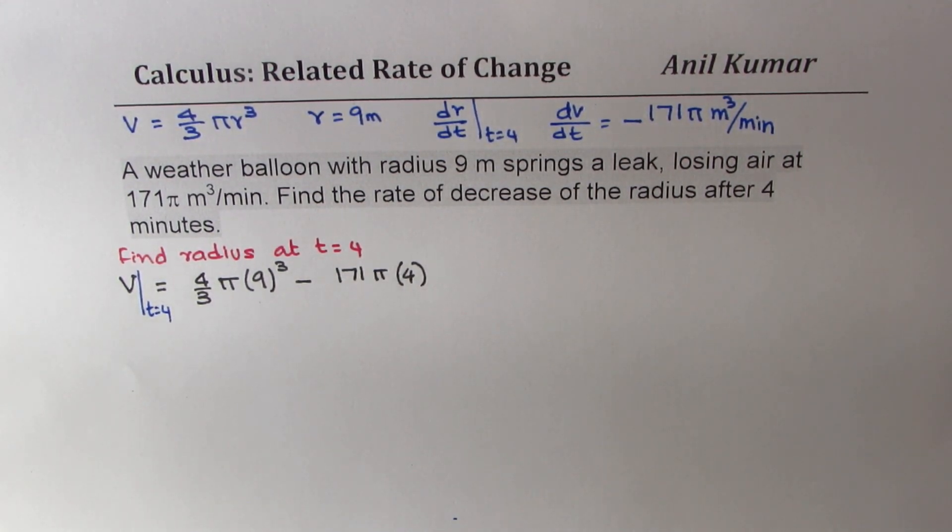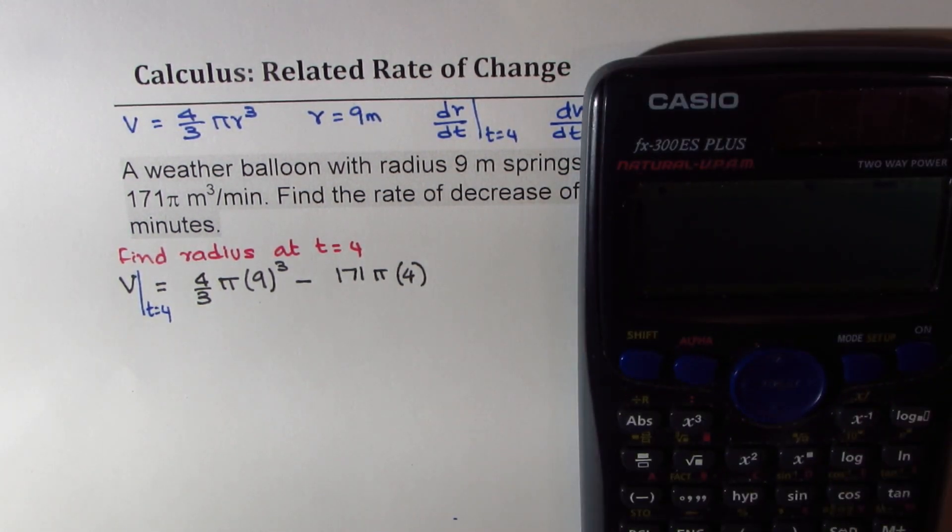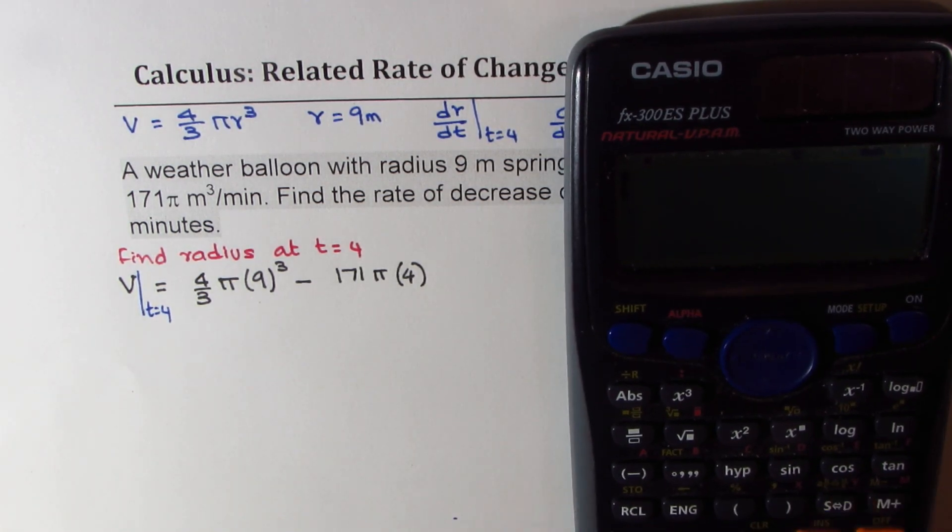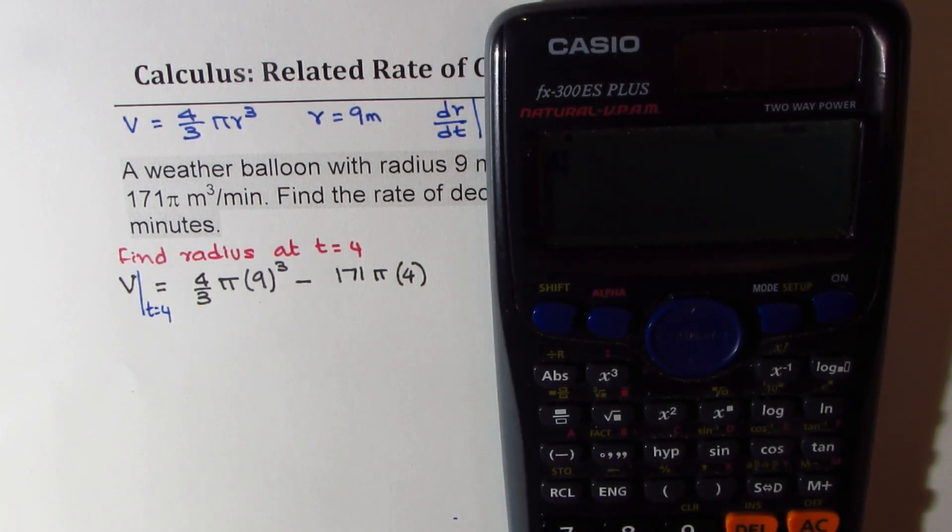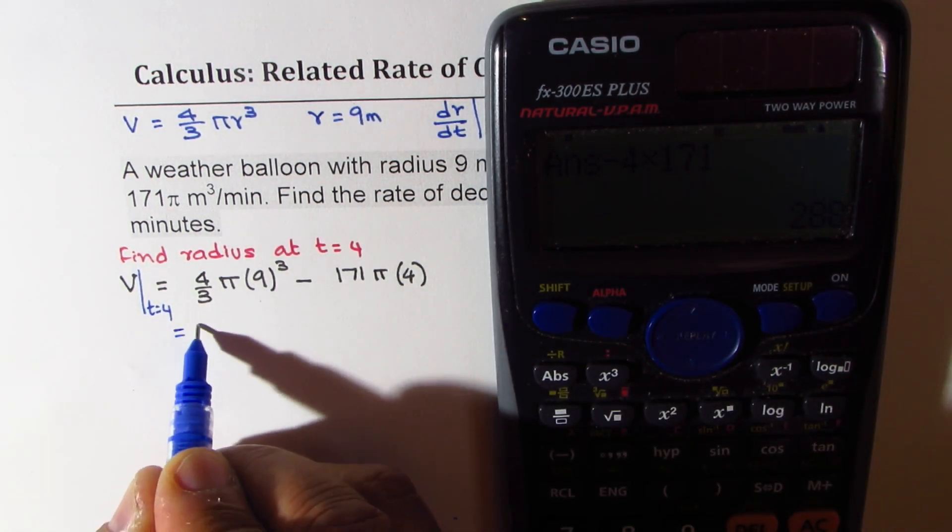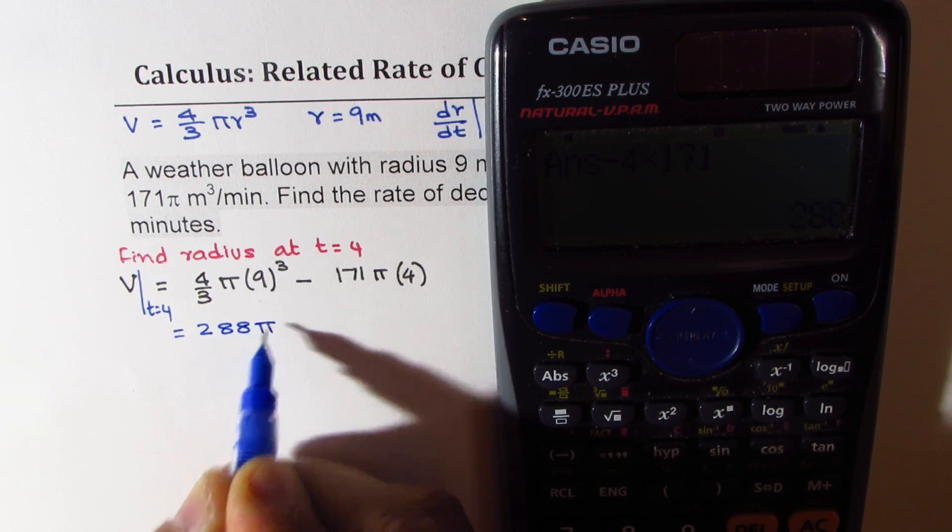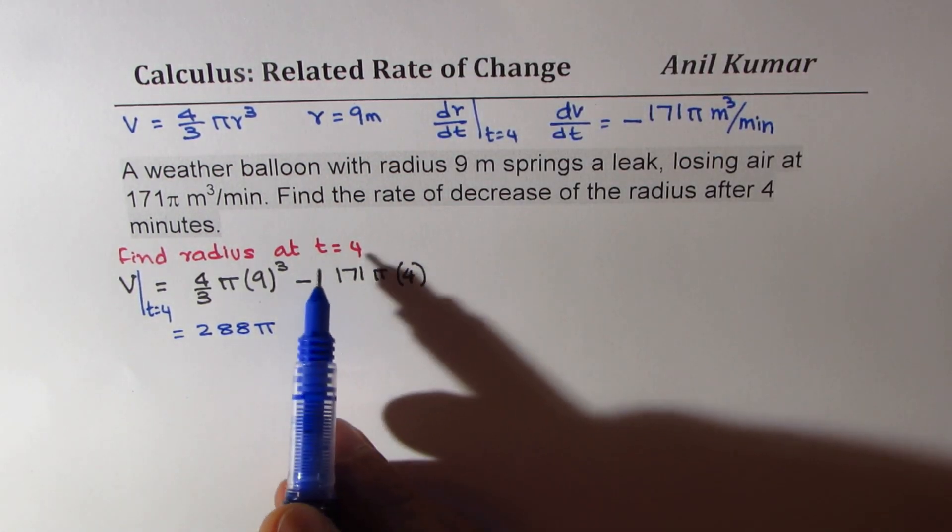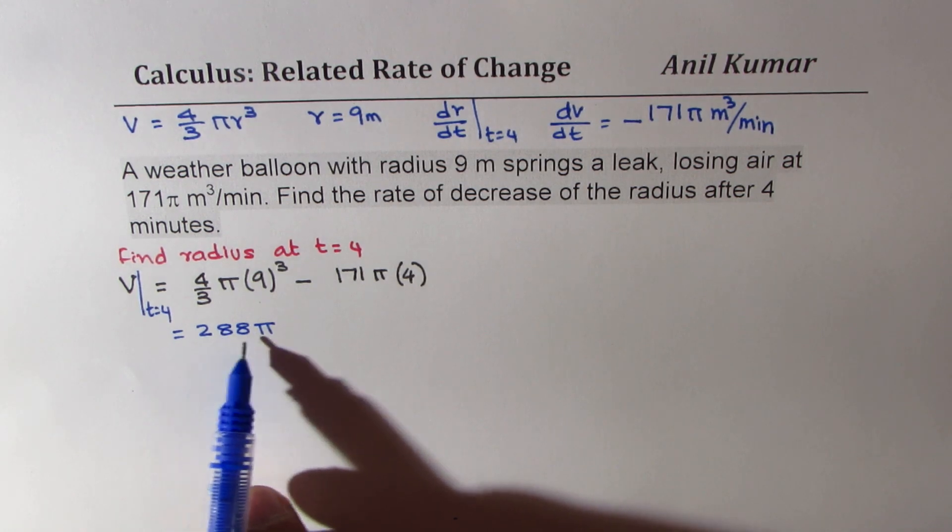So this is volume when t = 4. Is that clear to you? That is extremely important to understand. So let's use calculator and find the value. Pi is common, so we have 4 divided by 3 times 9 cube equals 972, and from this we'll take away 4 times 171, so we get 288. So this is 288π.